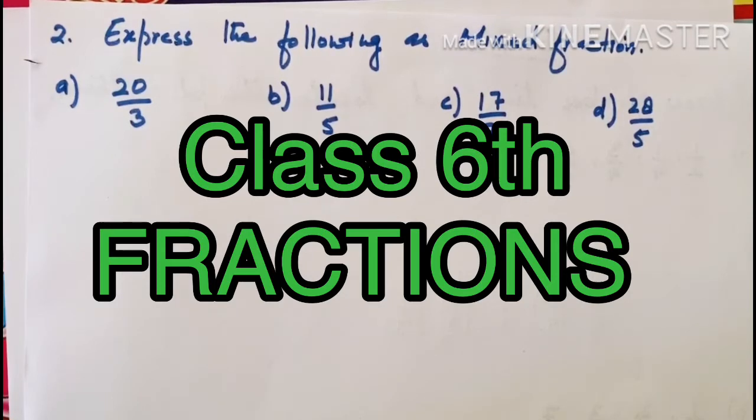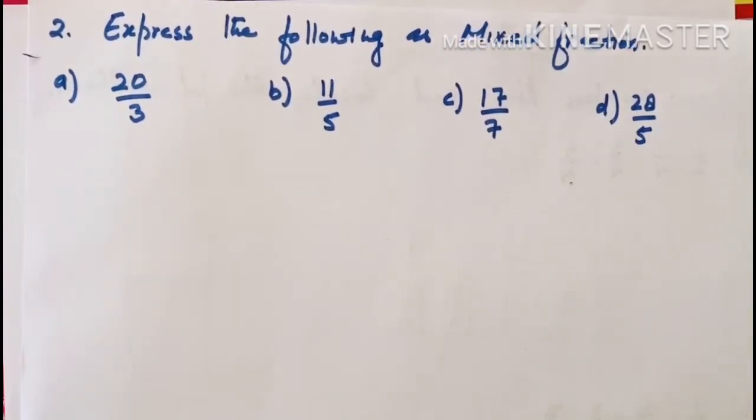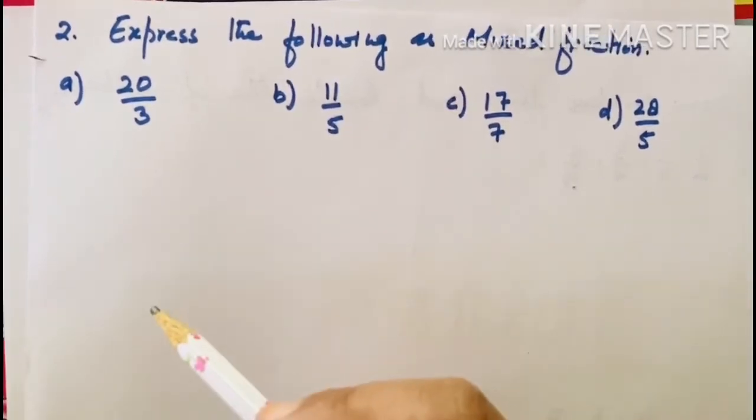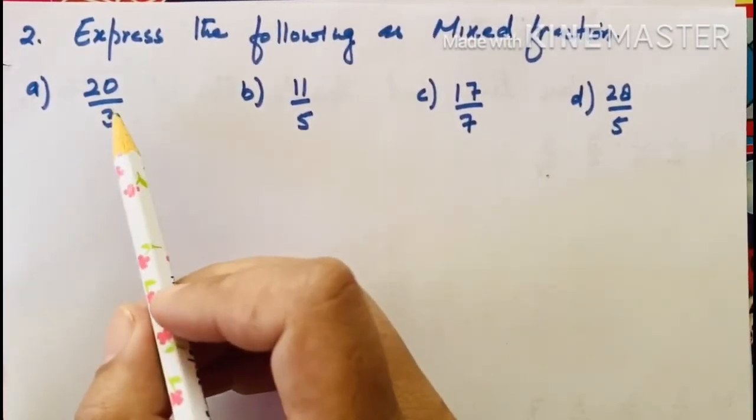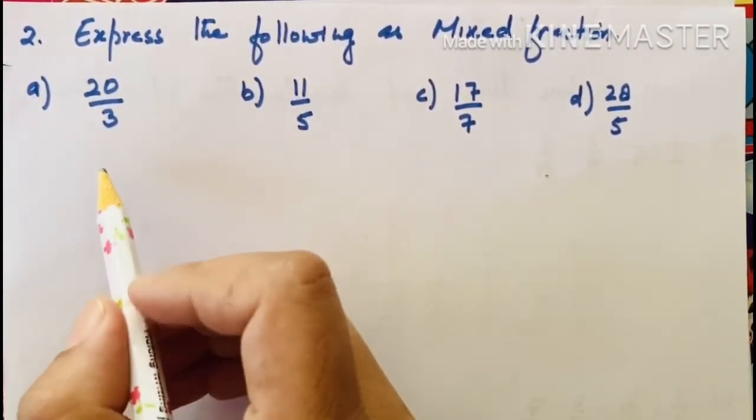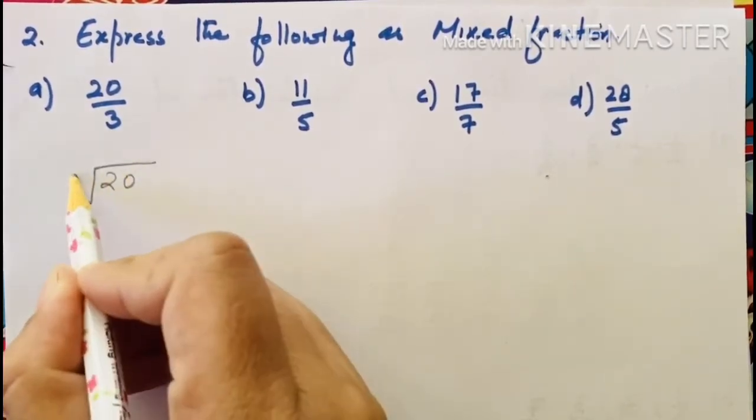You have to convert these improper fractions into mixed fraction. How can we do that? Let us do some examples. First of all, 20 upon 3. You have to convert this number into mixed fraction. 20 upon 3 means you have to divide 20 divided by 3.